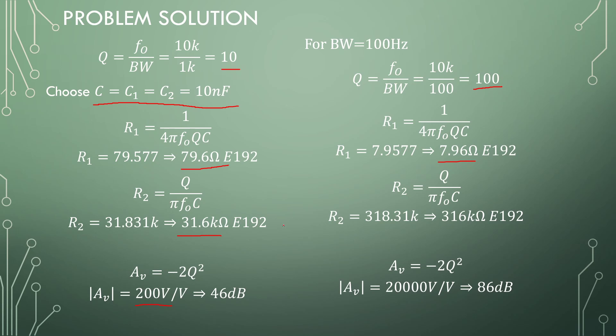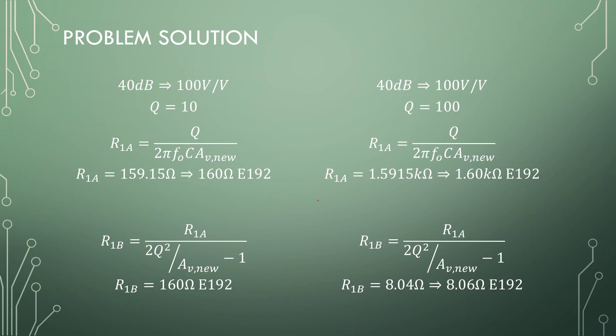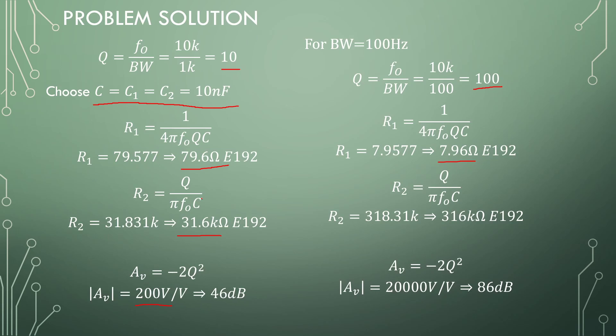Now, to design to correct the input gain. We have 200 available in this one and 20,000 in the second one. 40 dB gain is 100 V/V. In the first one, we have 200 available. For a voltage divider, the two resistors would be the same value. If we plug it into the first equation, we get 160 ohms. In the second one, we also get 160 ohms.